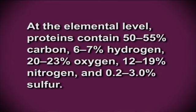At the elemental level, proteins contain 50-55% carbon, 6-7% hydrogen, 20-23% oxygen, 12-19% nitrogen and 0.2-3% sulfur. They are highly complex polymers made up of 20 different amino acids.